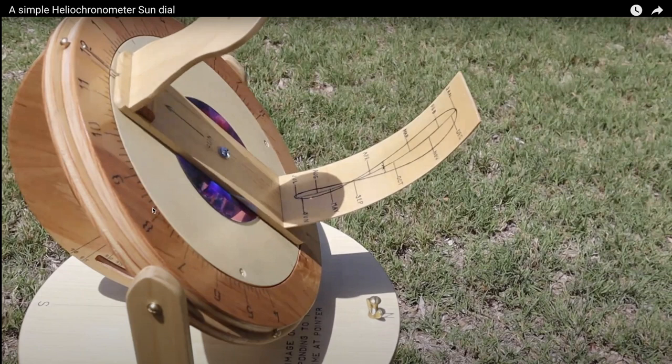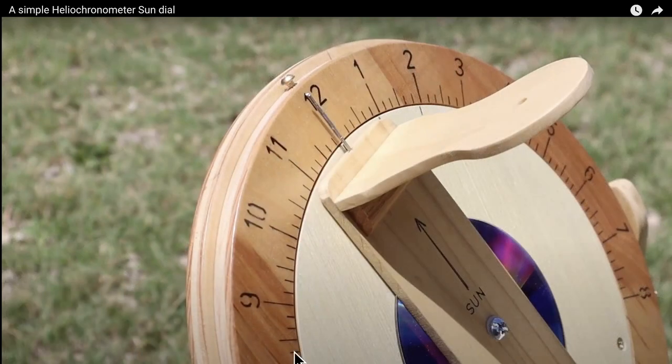Notice that he has the sundial marked up in 10 minute increments. That would be 8 o'clock, 8:10, 8:20, 8:30, 8:40, 8:50, 9 o'clock. And when everything is aligned you simply read off the time.